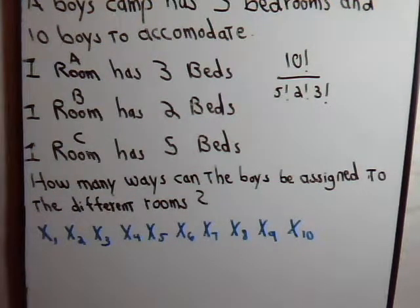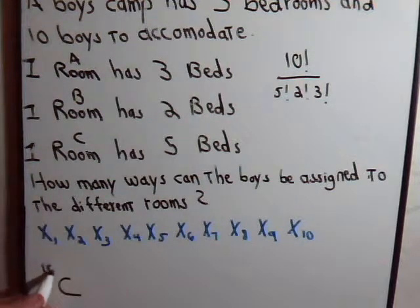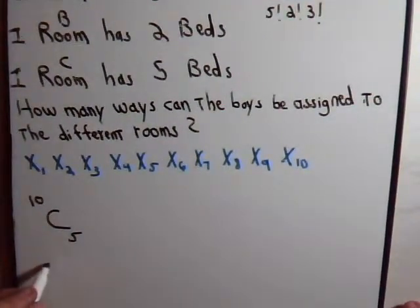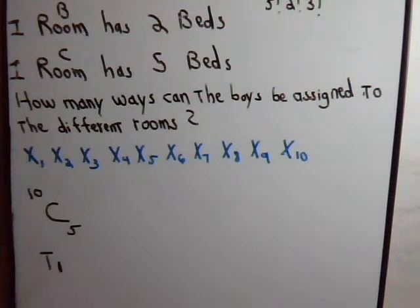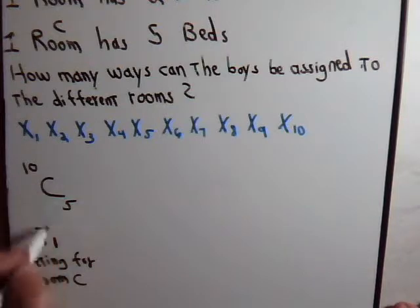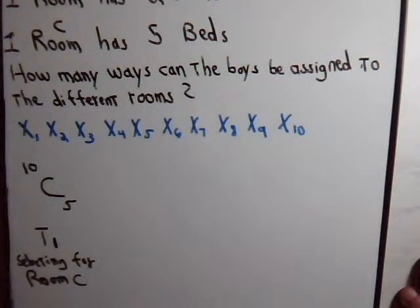What's the total number of ways that we can randomly select five of them and place them into room C? And of course that would just be this expression. And you can think of this as the first task. Task one is selecting for room C. One that has five boys in it. Okay.